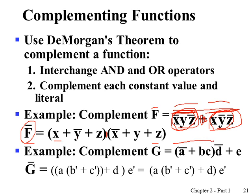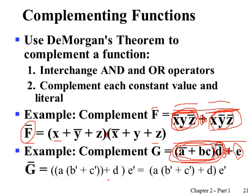Another example is the complement of function g, found by applying NOT over the entire expression. De Morgan's law is applied recursively: NOT is distributed to individual members in each group while interchanging operators from AND to OR or OR to AND. Continuing this process recursively yields the final complement expression for function g.